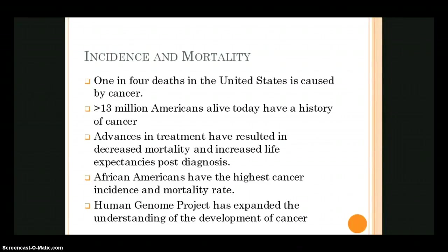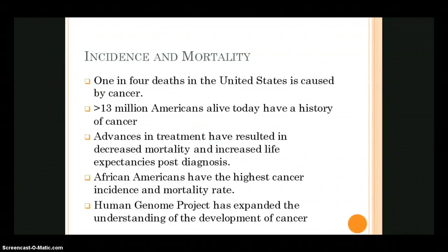The Human Genome Project started back in 1990. The idea was to map not only the 20,000 to 25,000 genes in human DNA, but also the 3 billion chemical pairs that make up human DNA. The goal was that if we could better understand both the genes and the chemical pairings, we could determine if there was a genetic link to certain types of cancer.